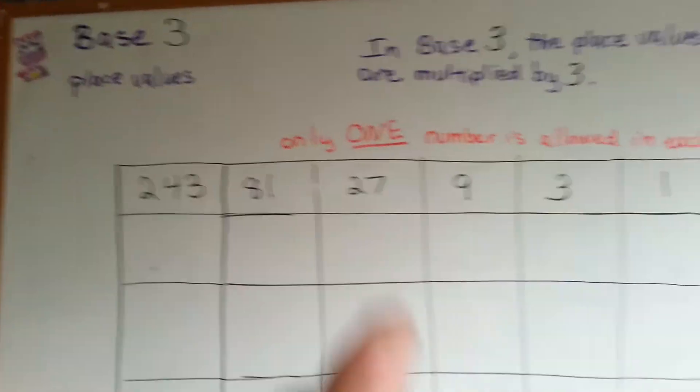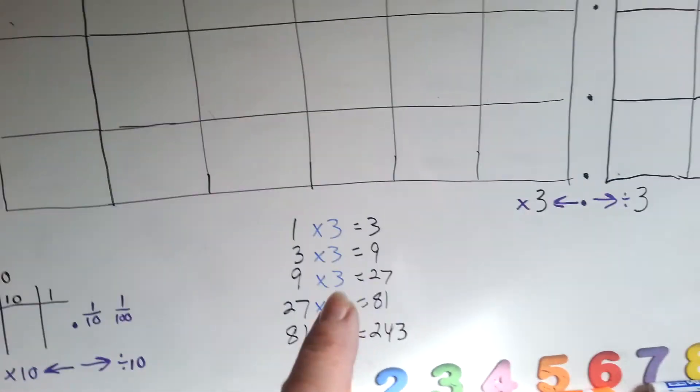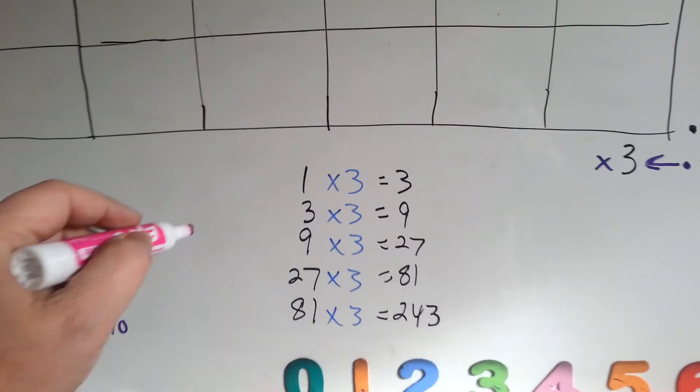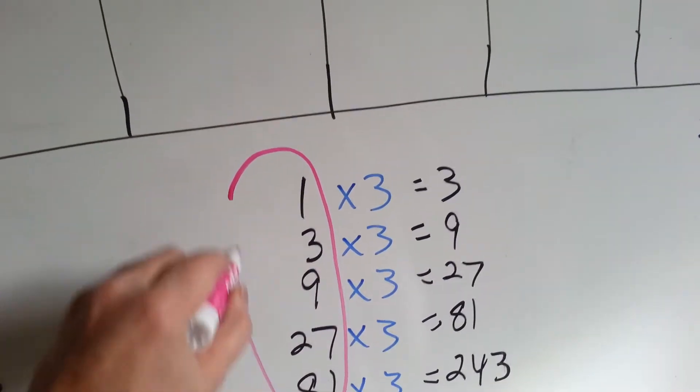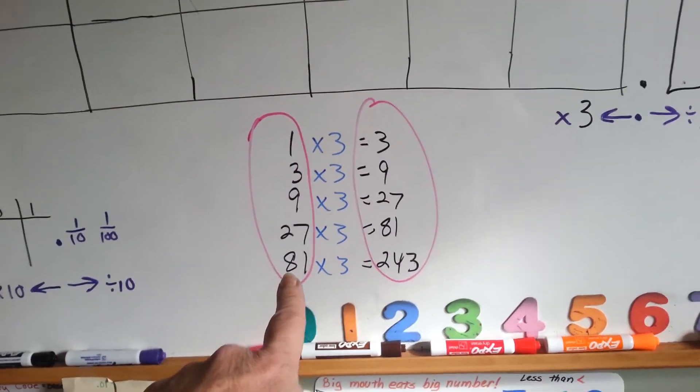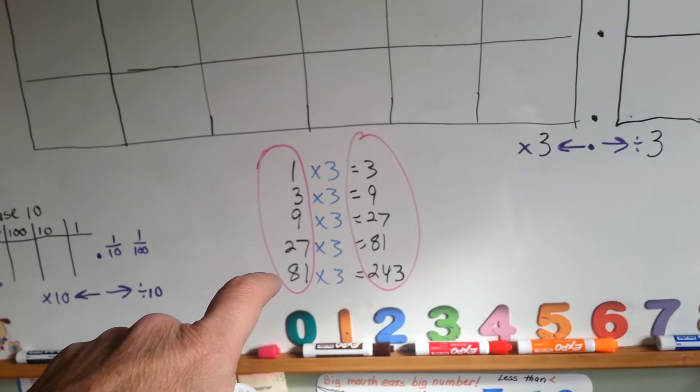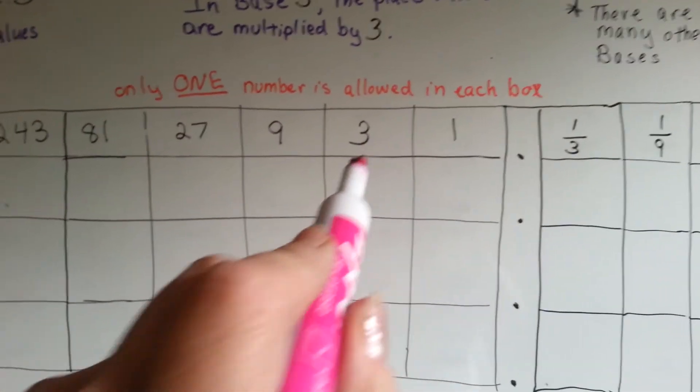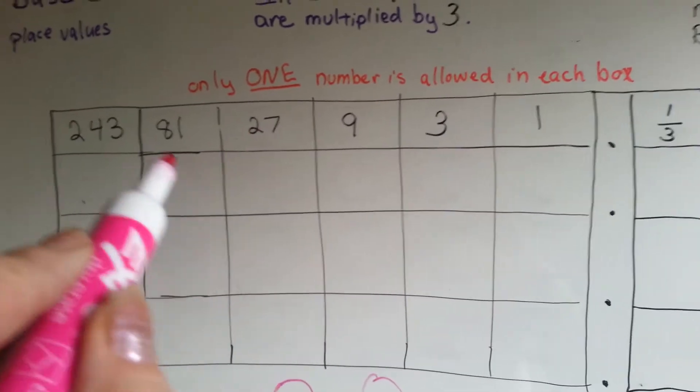So, in base 3, we are going to multiply and divide by 3. Our place value columns are going to be these. Instead of ones, tens, and hundreds, we're going to have a ones place, a three place, a nines place, 27s, 81s, and 243s.